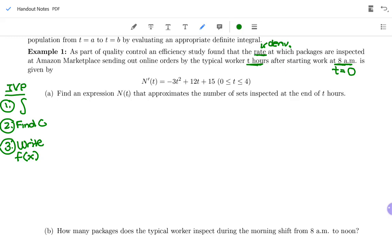We're going to find an expression N(t) that approximates the number of sets inspected at the end of t hours. So we want to find the total number inspected. My first step to finding N(t) given N prime, this is just like initial value, but we were given f prime and asked for f. So my first step is going to be to take the antiderivative. I'm going to take the antiderivative of N prime to get back to N.